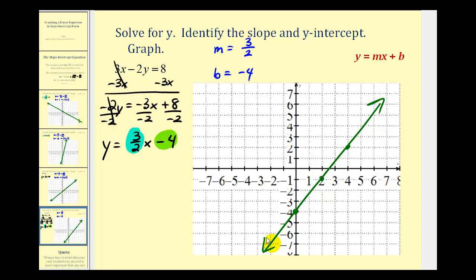Of all the forms of a linear equation, the slope-intercept form is probably the most popular because it is the easiest to graph. I hope you found this helpful.